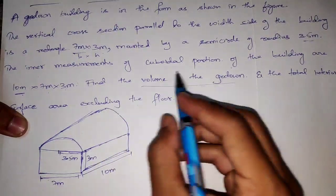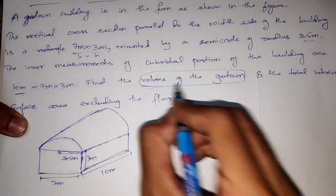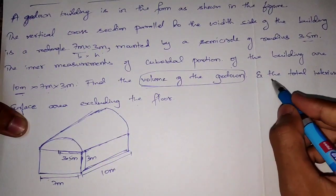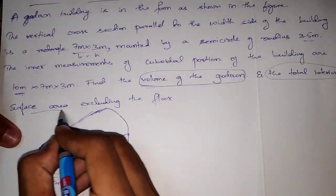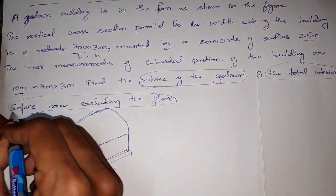Find the volume of the building. Next, find the total interior surface area, excluding the floor.